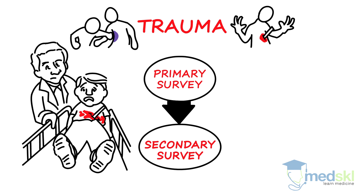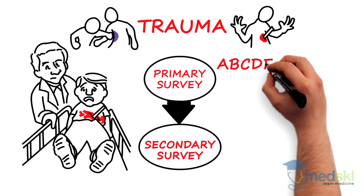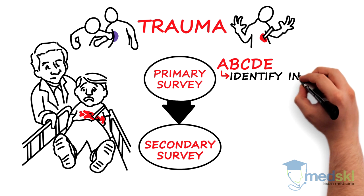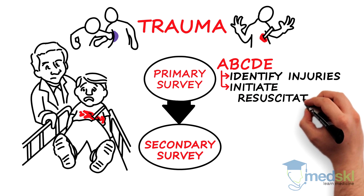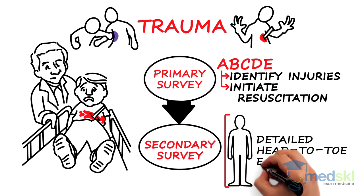Don't let the blood and gore distract you. The primary survey entails a systematic assessment using A, B, C, D, E in order to identify the true life-threatening injuries and initiate resuscitation. Then a detailed head-to-toe exam should occur, which we call the secondary survey.